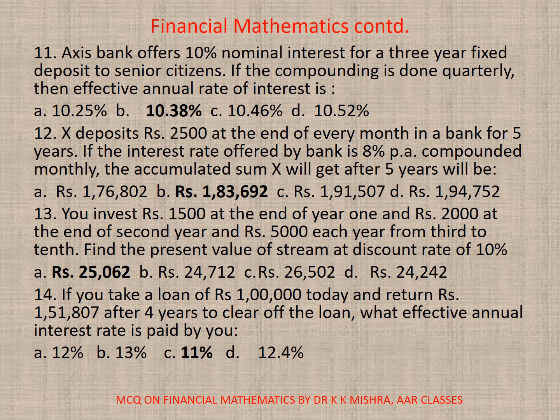Question 11: Axis Bank offers 10% nominal interest rate for a 3-year fixed deposit to senior citizens. If the compounding is done quarterly, then the effective annual rate of interest is — correct option is B — 10.38%.